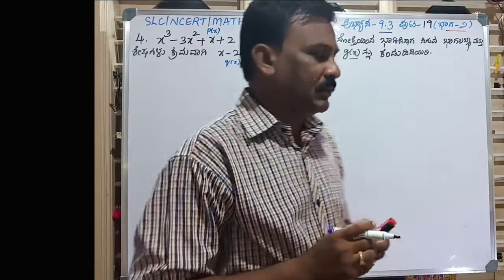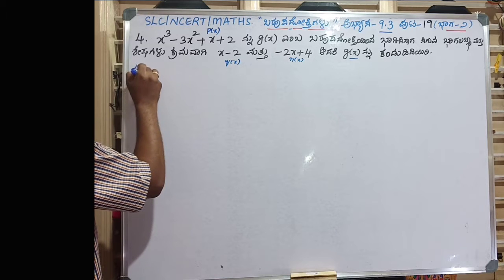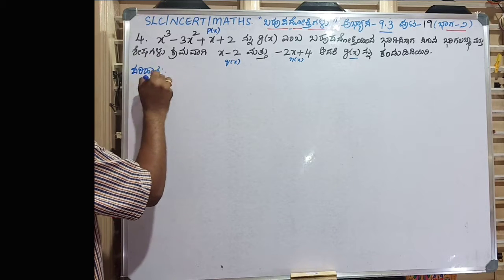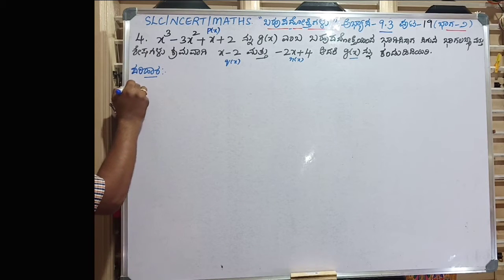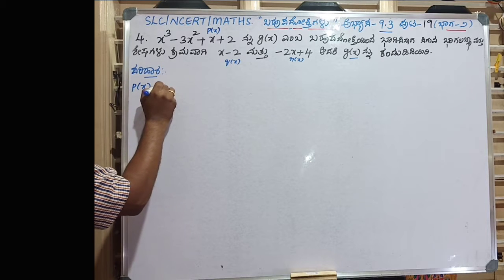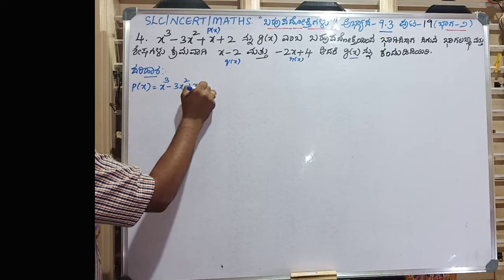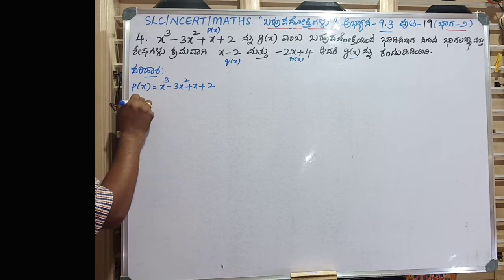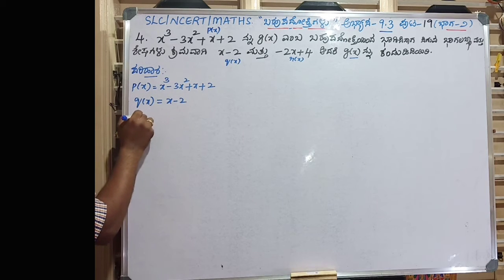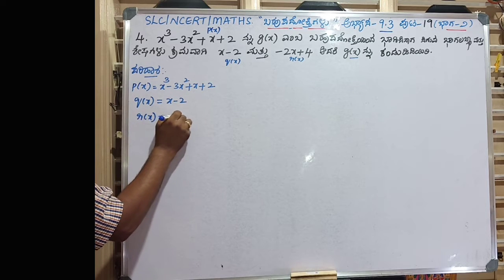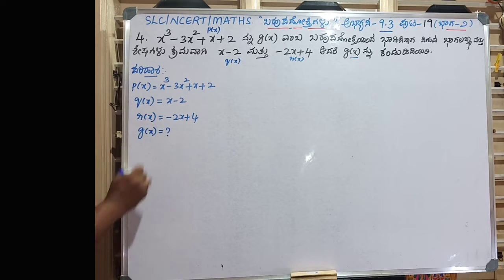So, this is the value of X. Q of X is equal to X cube minus 3X square plus X plus R2. Q of X is equal to X minus R2. R of X is equal to minus RdX plus 4. G of X is equal to question mark.